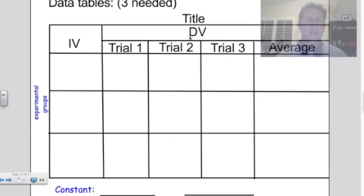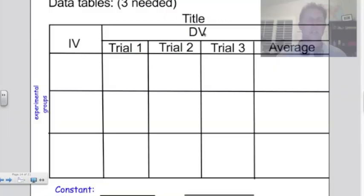Given our discussion from the previous day, you should know what your independent variables are and what your dependent variable is going to be. Don't forget a title at the top of your data table, and also underneath the data table, identify specifically what you're holding constant. This will help you for your lab write-up when we ask you to do that a week from now.